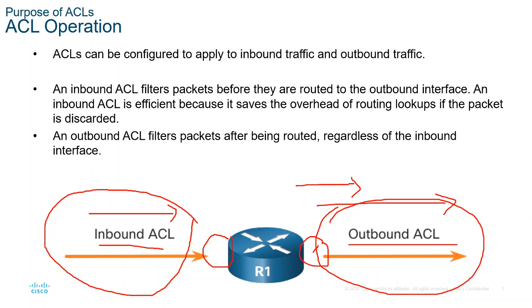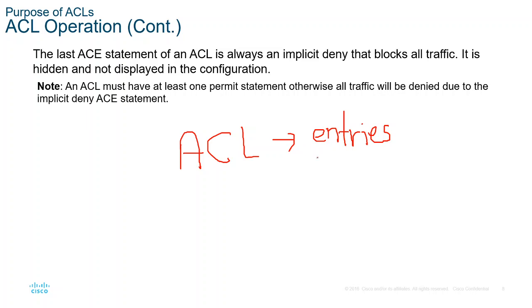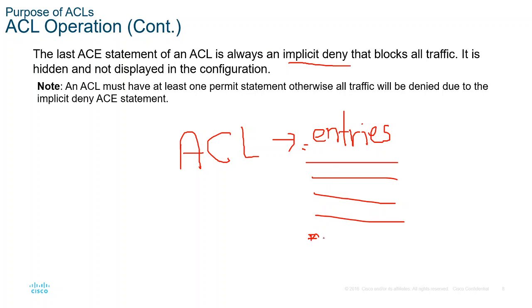One important note about ACL: we have entries (ACEs), and at the end of the entries — which we don't see — there is an implicit deny statement. This means after all entries are checked, the last statement will deny all traffic by default. This is called implicit deny, which denies all traffic at the end of the ACL.